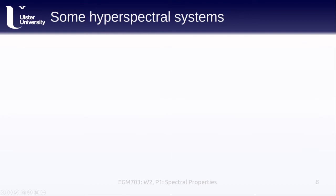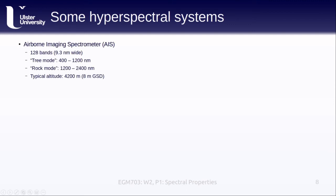Next up, we'll look at the characteristics of a few different hyperspectral systems. The first of these, the Airborne Imaging Spectrometer, records in 128 bands with a bandwidth of 9.3 nanometers. It operates in two different modes, a tree mode between 400 and 1200 nanometers, and a rock mode between 1200 and 2400 nanometers. The reason for the names here is that for most vegetation, visible and near-infrared wavelengths are the most important for identification, while for rocks and minerals, it's often the short-wave infrared that is more useful. This sensor was typically flown at an altitude of about 4200 meters, which gives it a ground sampling distance of about 8 meters.